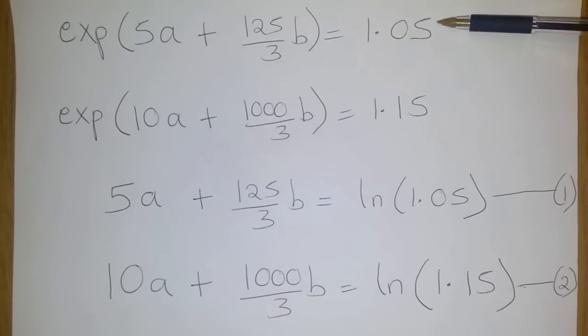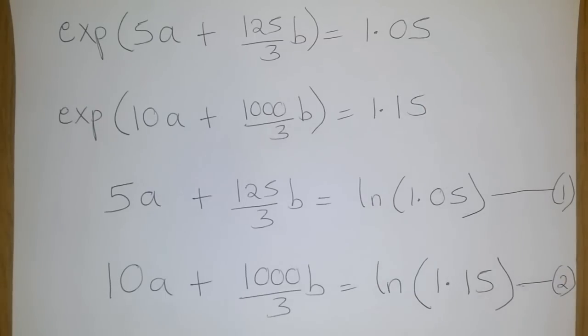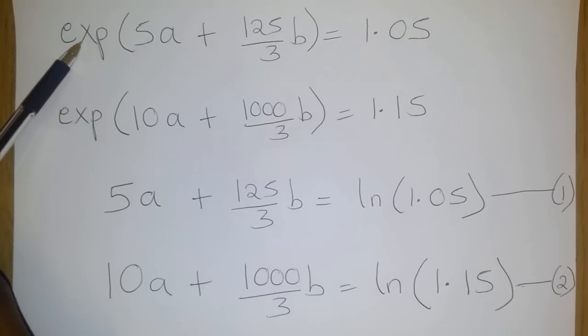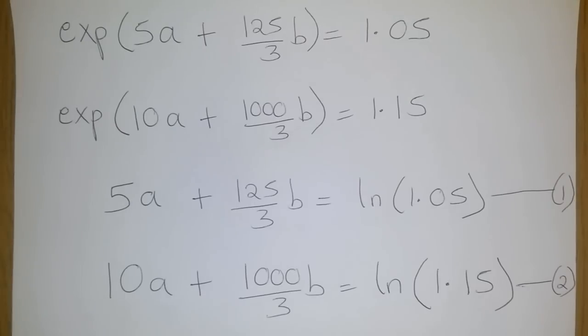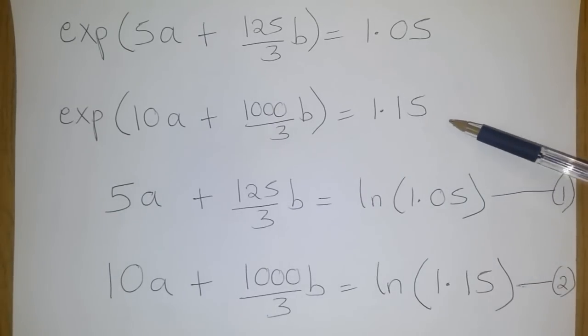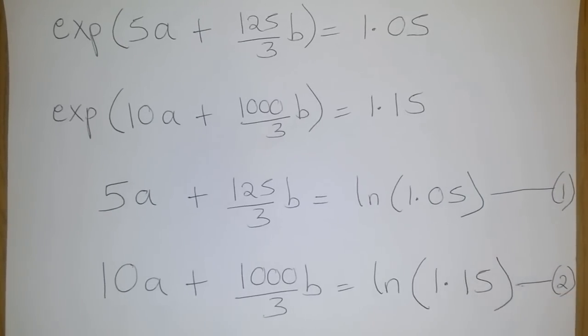So, this is equation 1 and this is equation 2. If we introduce the natural log, we end up with the exponential on the left-hand side being cancelled, while on the right-hand side we end up with the natural log of 1.05. Well, for equation 2, the exponential is also cancelled, and on the right-hand side we end up with the natural log of 1.15.